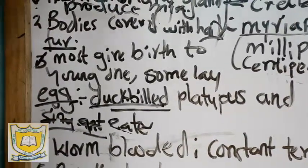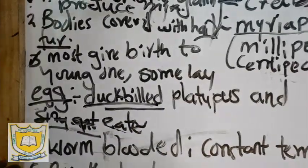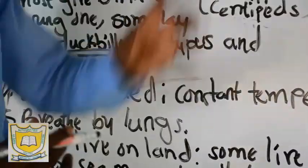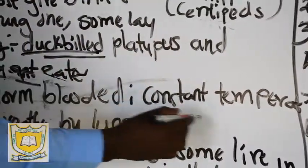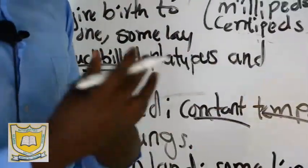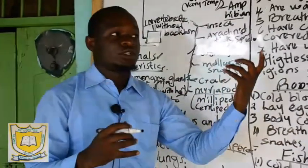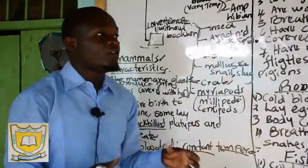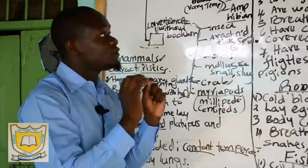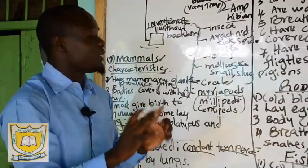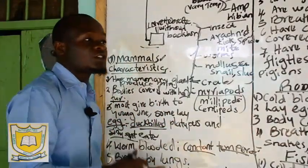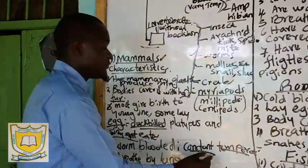Characteristic number four: mammals are warm-blooded, meaning they have a constant body temperature. When they move from one zone to another, the temperature remains the same. For example, if you measure your temperature at Garissa and then move to a cold area like Nairobi, your temperature will still be constant — it will not change because of the variation.